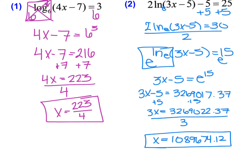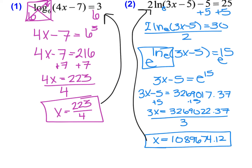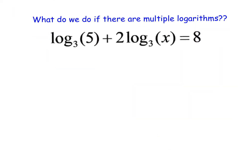We have found an x value for each one, and if you plug these x values back into the original equation, you would end up with an equation that is true. Now we need to discuss what to do when there are multiple logarithms within a problem. Here we have two logarithms, both of base 3. When we can't get the logarithms completely by themselves because there are other numbers outside, we first need to condense them down into one logarithm — this is where our logarithm properties are really important.